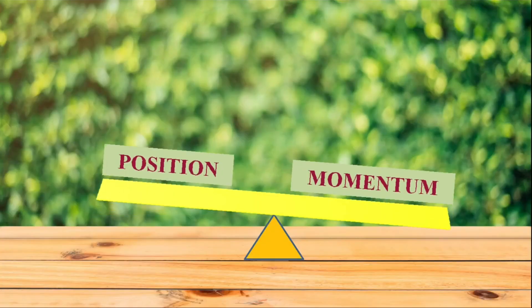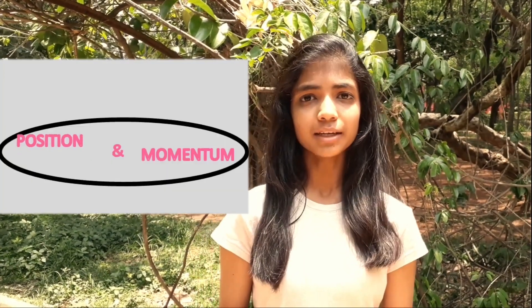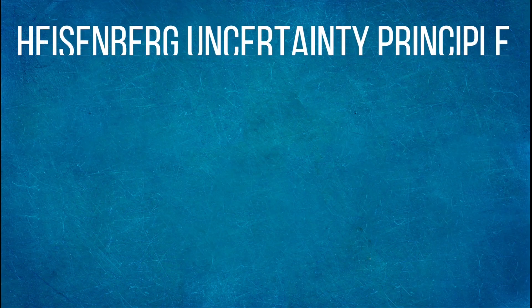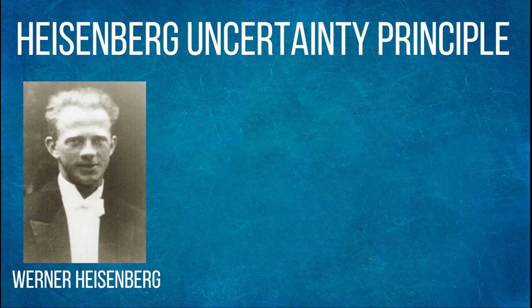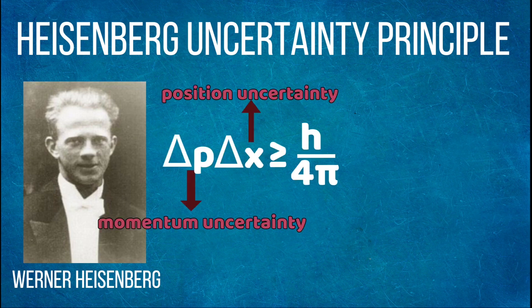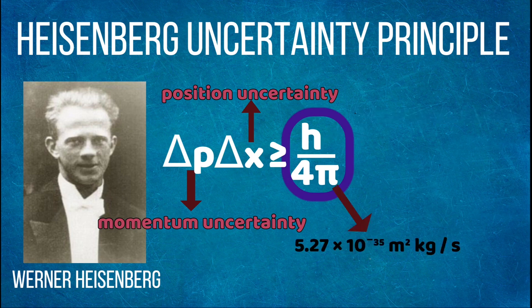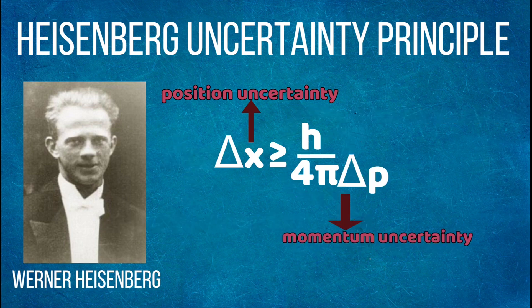So the more we know about one, the less we know about the other, and vice versa. Thus, it is impossible to simultaneously know the exact position and momentum of a quantum object. That's the Heisenberg uncertainty principle, where the position and momentum uncertainties are always greater than or equal to h over 4π, which is a very small number, hence this isn't observed in real life.